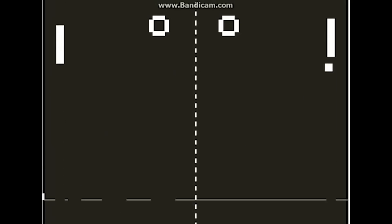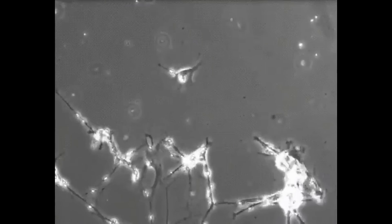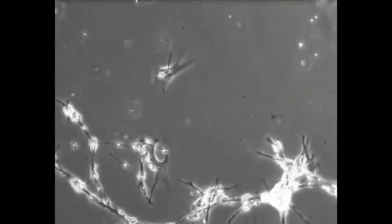The scientists used a system called DishBrain, which includes 800,000 neurons from human donor stem cells, as well as brain cells dissected from mice.